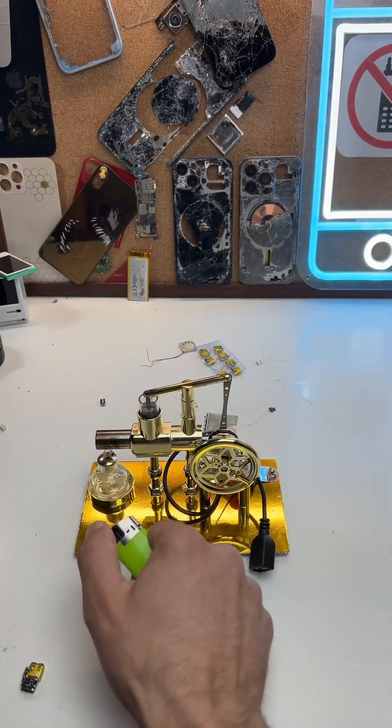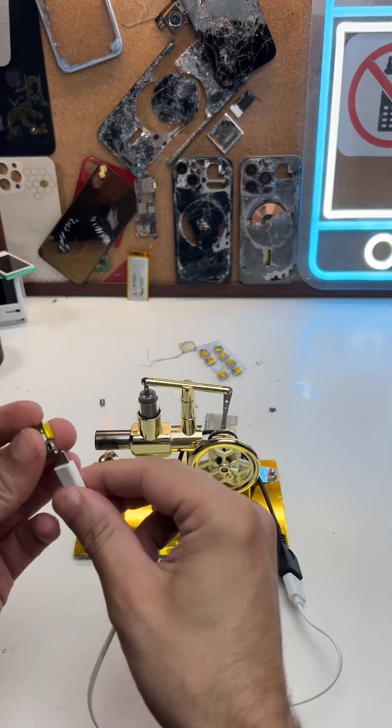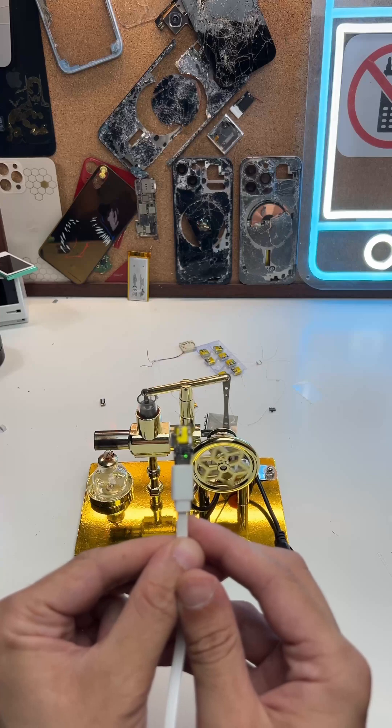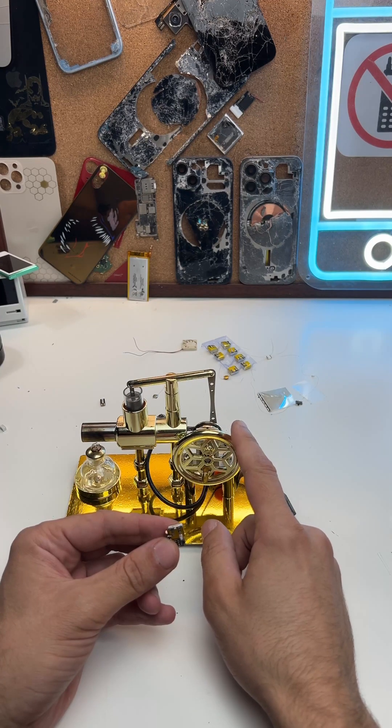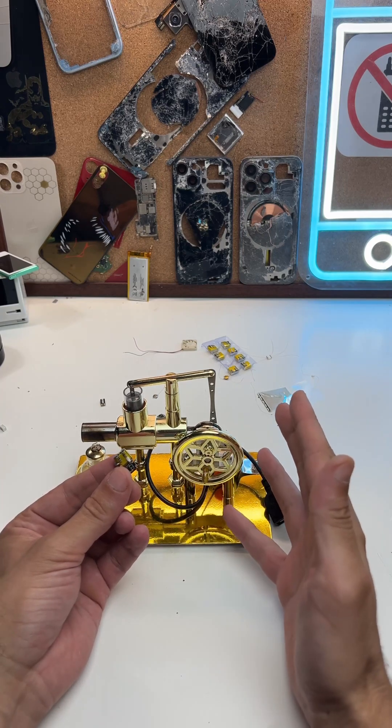Let's make some electricity the old school way, and it seems it doesn't really charge. Well, now at least we know that the mini sterling engine can't charge my forbidden mints.